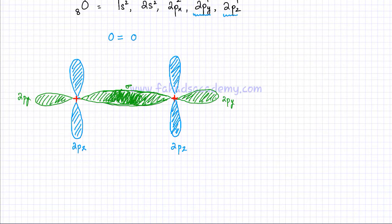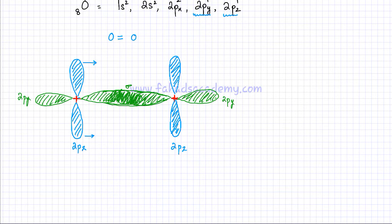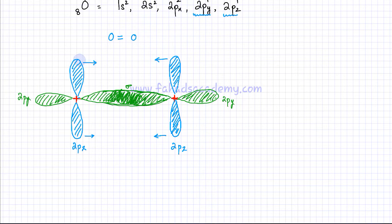Now, what would happen with the 2pz orbitals, which are drawn in blue over here? They are in parallel — they cannot be end-to-end — because the 2py and 2pz orbitals are on opposite axes at 90 degrees. The 2pz orbital, drawn in blue, needs one electron as well. The right-hand oxygen atom is going to try and attract an electron from the 2pz orbital, whereas the other oxygen atom is going to do the same — it's going to try and attract the electrons from the other 2pz orbital towards itself. Because both oxygen atoms are attracting those electrons equally, the highest probability of finding an electron would be right in the middle, and the new bonding orbital — the 2pz orbitals — are going to merge together.